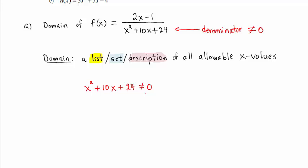We will solve this non-equation, you might say, the same way we would solve an equation. Because this has an x squared, we will factor x plus 6 times x plus 4 not equal to 0. x plus 6 cannot equal 0. x plus 4 cannot equal 0.